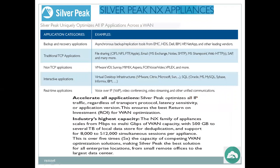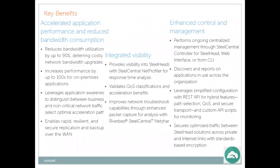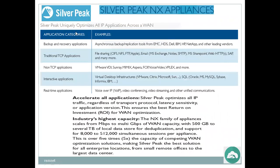Now we look at Silver Peak — NX Appliances. Silver Peak uniquely optimizes all IP applications across the WAN. Application categories include: backup and recovery applications — asynchronous backup and replication tools from EMC, HDS, Dell, IBM, HP, NetApp; traditional TCP applications — file sharing such as CIFS, NFS, FTP, Apple; email — MS Exchange, Notes, SMTP, SharePoint; web — HTTPS and SAP; non-TCP applications — VM, VDI; interactive applications — virtual desktop infrastructure from VMware, Citrix, Microsoft; SQL databases; and real-time applications like VoIP — Skype, Zoom meetings.